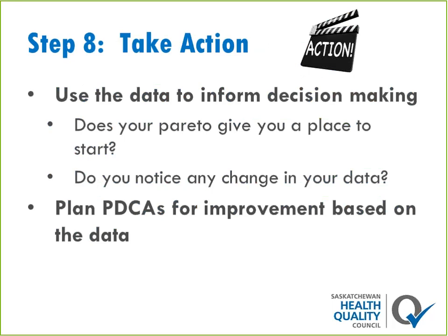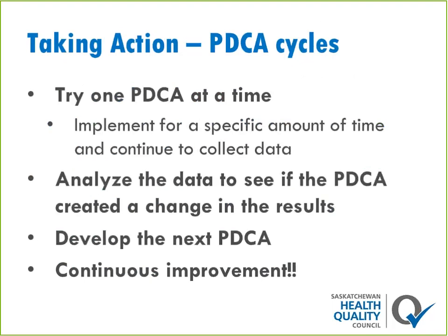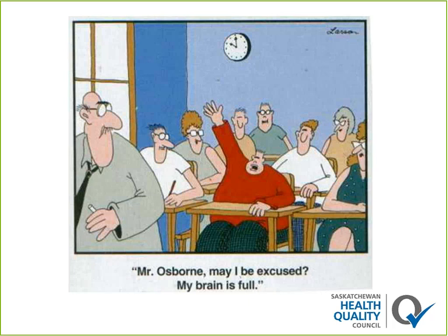The final step is to actually take action. If you've got a Pareto, does it highlight where to focus initial effort? If you've been working on a PDCA, have you noticed a shift in the data? Has your process improved? Has your outcome measure shifted? Whether the PDCA did or did not create a change, there's still action to be taken. If it did change, try to sustain that process and keep measuring over time. If it didn't work, analyze that PDCA, see what you learned, and try again. For PDCAs: try one at a time, implement for a specific amount of time, collect data, analyze to see if it resulted in change, and based on what you learned, develop the next one and continuously improve.